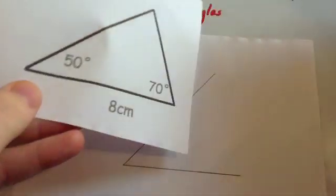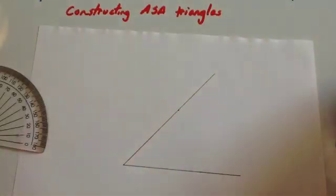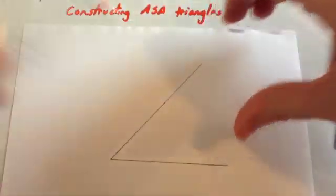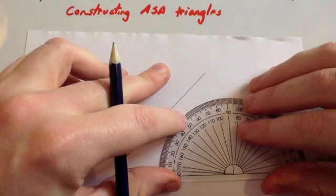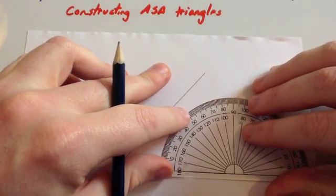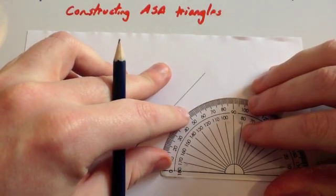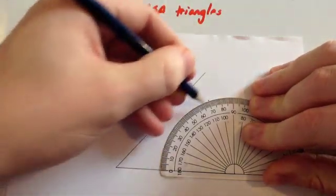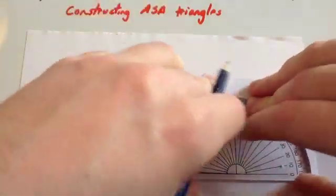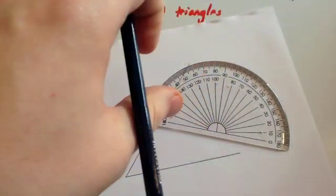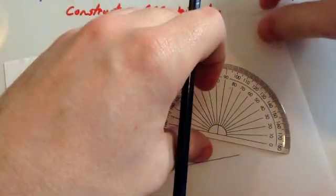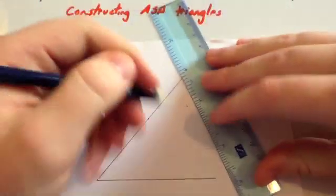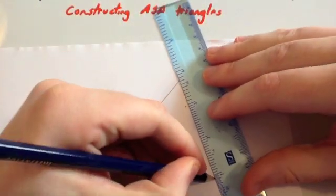The other side is a 70 degree angle, so get your protractor again and put it on the other side of the line. Go to where 70 degrees is and put a mark — zero around to 70. Get your ruler, line up with the end of the line and the point, and draw a nice line.